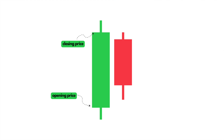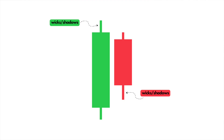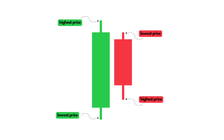On the other hand, the closing price, which is the asset's price at the end of the time period, can be seen at the top of the candlestick's body. A red candlestick represents when the asset's price has depreciated or went downwards. In this scenario, the opening price is seen at the top of the candlestick's body while the closing price is seen at the bottom. You can also see some lines sticking out of the candlestick's body which are called wicks or shadows. These lines represent the highest and lowest prices the asset has reached during the time period.